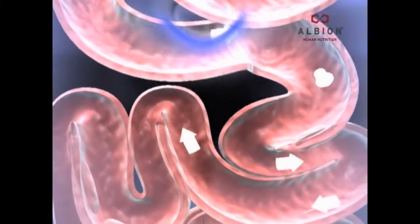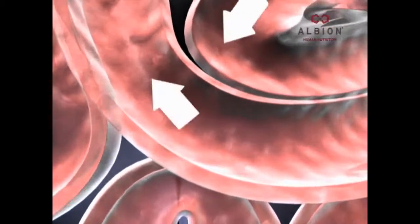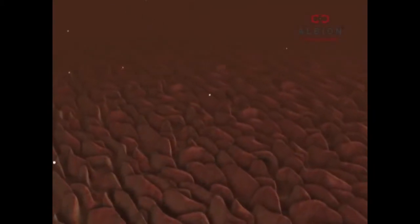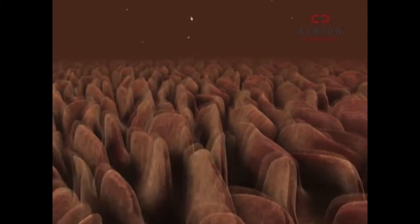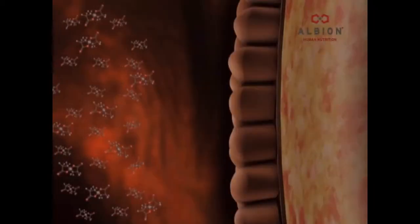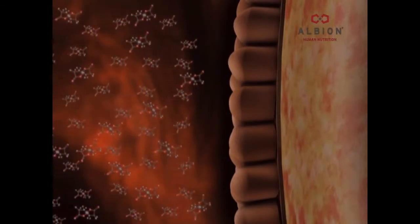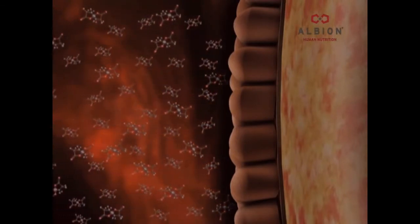The illustration shows how the bioavailability happens. Once digested, the chelated mineral is 100% nutrition. Both the mineral and the amino acid are used by the body on a cellular level. The characteristic stability of Albion's chelated minerals allows the mineral to be protected in the amino acid structure and not cause unpleasant effects with the stomach lining.